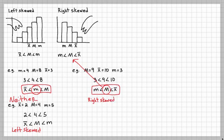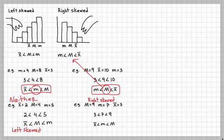One more example: the median is 9, the mode is 7, and the mean is 3. Put them in order: 3 is the mean, 7 is the mode, and 9 is the median. The median is not in the middle, so this does not match left skewed or right skewed — this is neither.